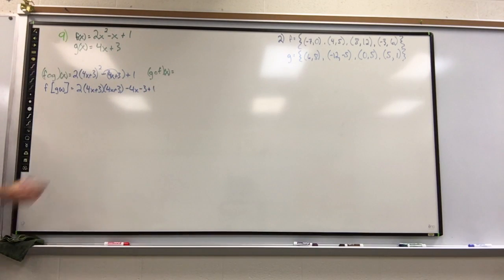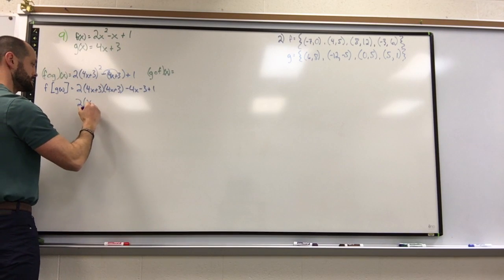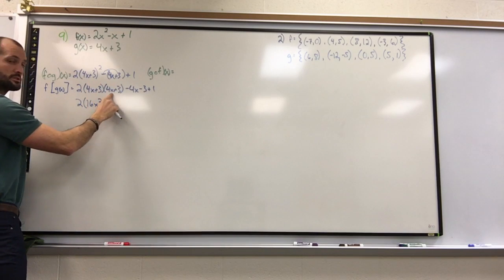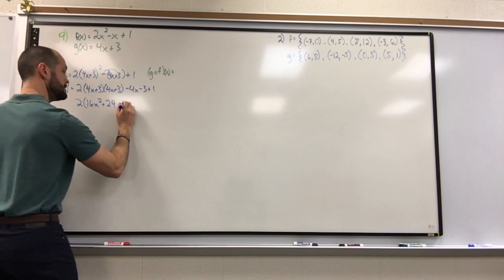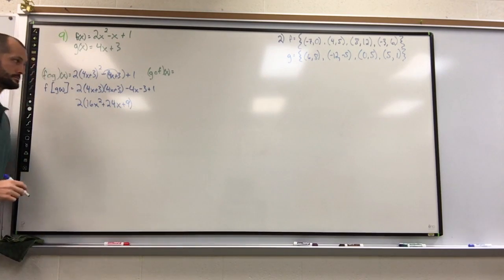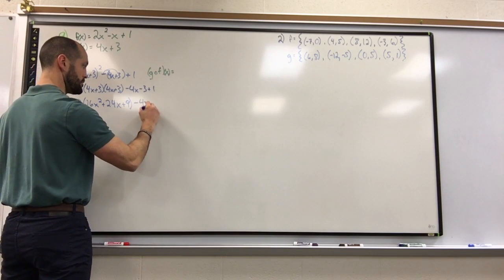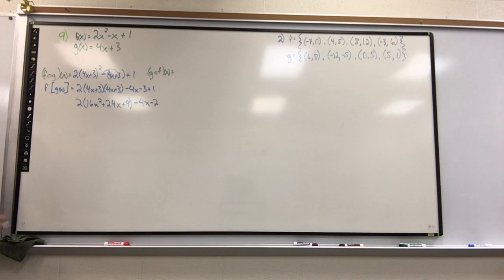All right, foil is in session. We'll get a 16x squared. Now that'll give me 12x and that'll give me 12x for a total of 24x plus 9. Okay, now at the back end I'm just going to do some simplifying. I got minus 4x minus 4x minus 2. Distribute the two, we get 32x squared plus 48x plus 18 minus 4x minus 2.